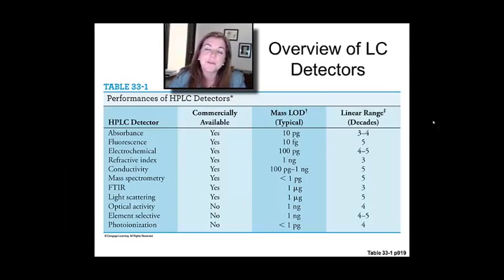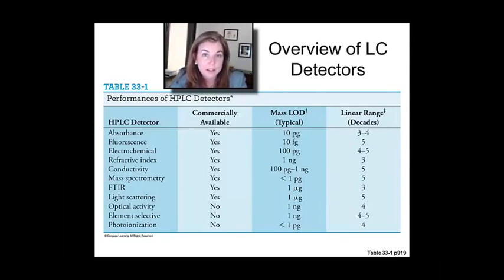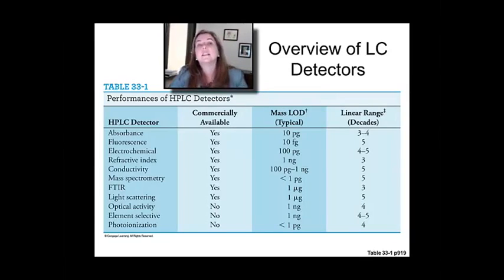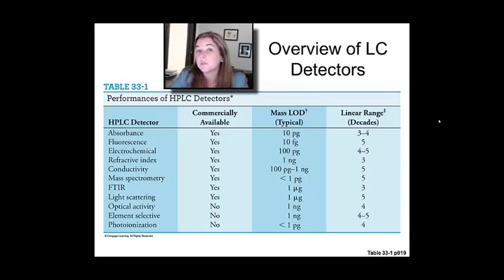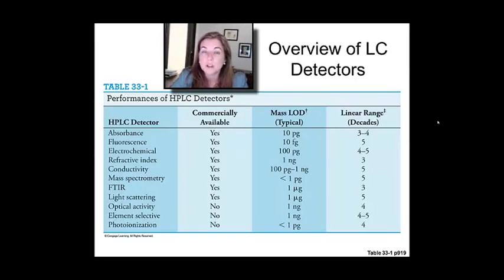Mass spectrometry has been one of the big advances over the last decade — really the explosion of liquid chromatography coupled with mass spectrometry, which is a big challenge if you think about it because you're spraying liquids into a pumped-down mass spec system. But people have figured out how to do that, and it's absolutely vital for proteomics research. The go-to common methods are going to be absorbance and refractive index, and that's what you're going to see in a lot of commercial-grade liquid chromatography systems.